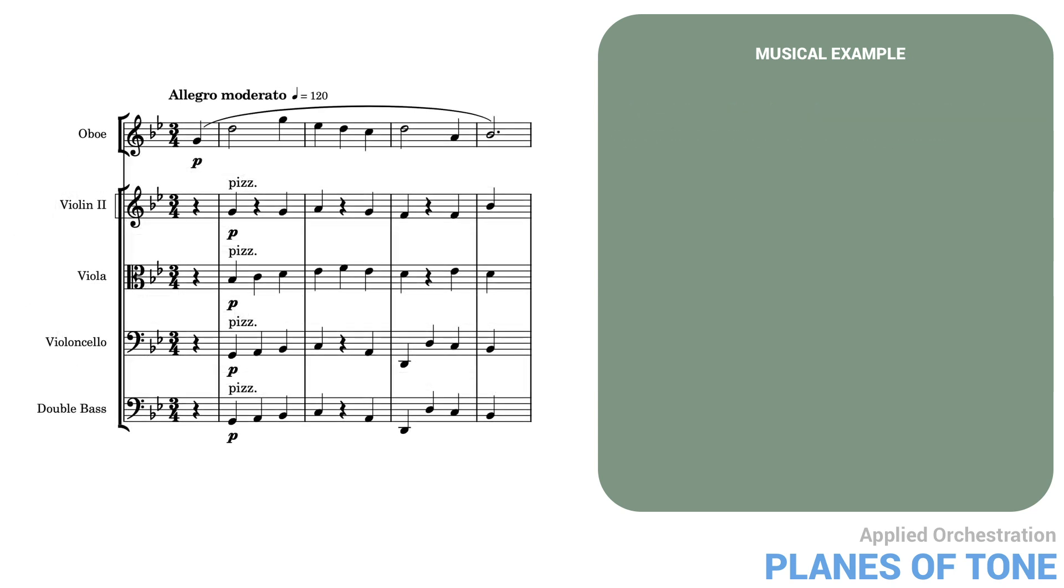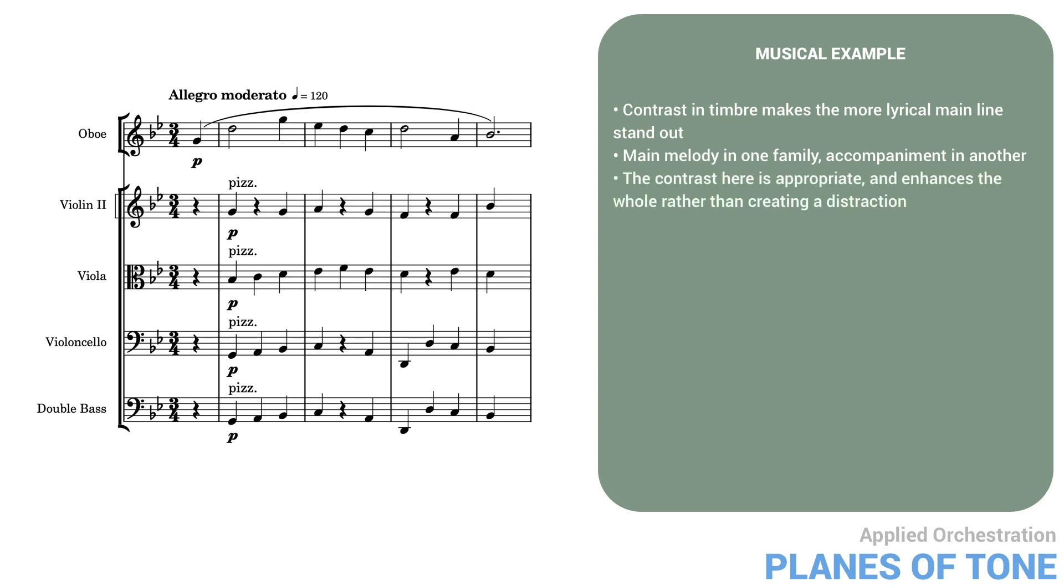Let's go back to our oboe and strings example. Here the contrast in timbre makes the more lyrical main line stand out in relief. This is one of the simplest and most effective kinds of orchestration: main melody in one family, accompaniment in another. The contrast here is appropriate and enhances the whole rather than creating a distraction.